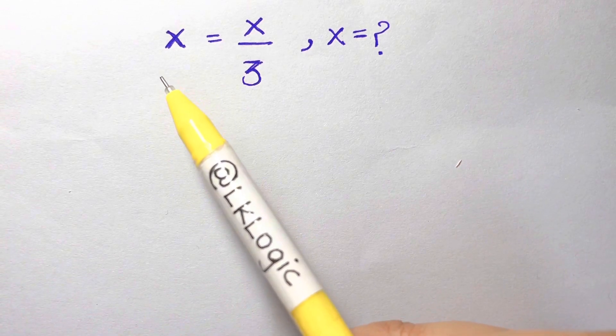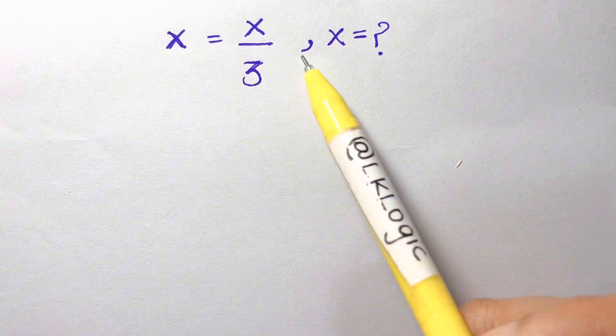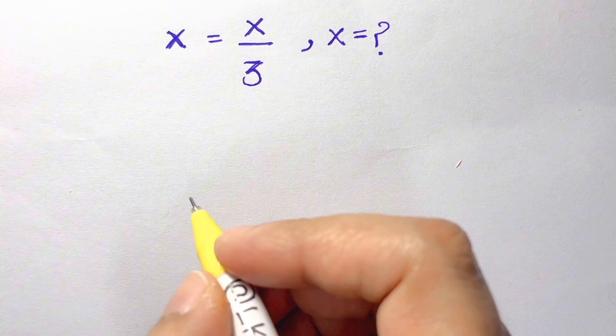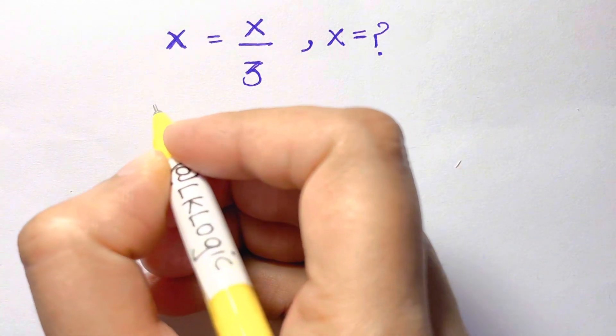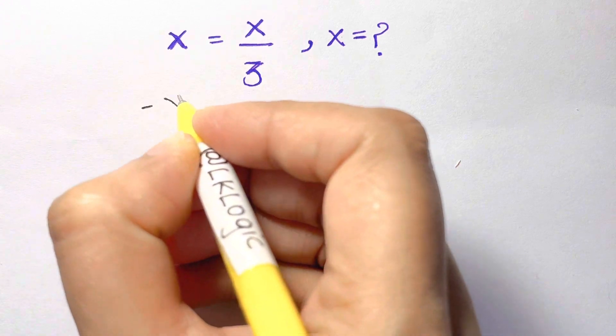Hi everyone, let's solve this interesting question: x equals x over 3, and what is the value of x? So first of all, we're going to subtract both sides by x over 3.